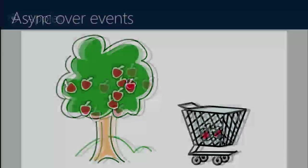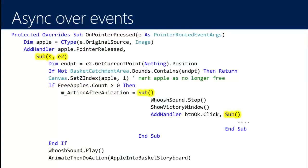Looking at the code the user had written, it quickly became hard to understand. They tried to keep control flow linear by putting everything into one big method, but it got out of hand: adding a pointer-pressed handler, checking if the app is pressed, setting animations, handling button OK clicks, trying to loop back to the beginning. You feel like you're contorting yourself because you have to deal with all these nested lambdas.